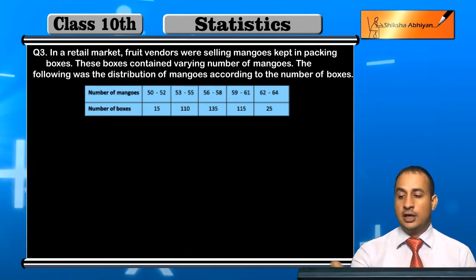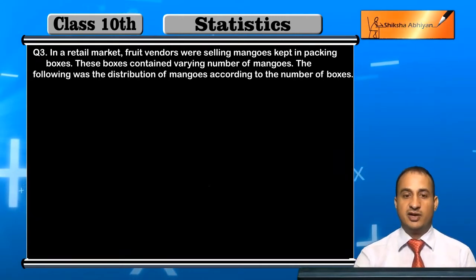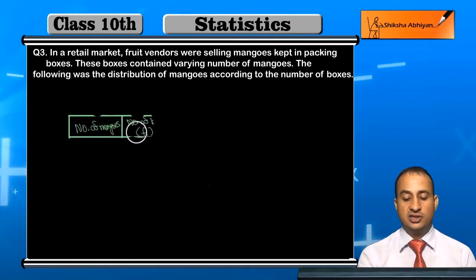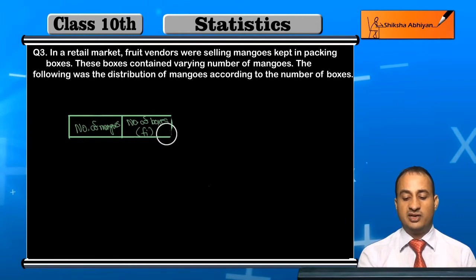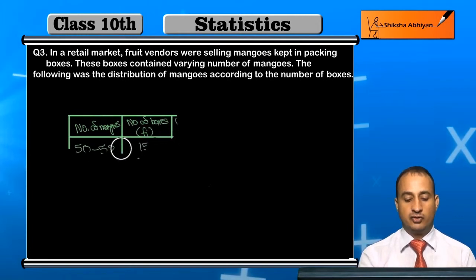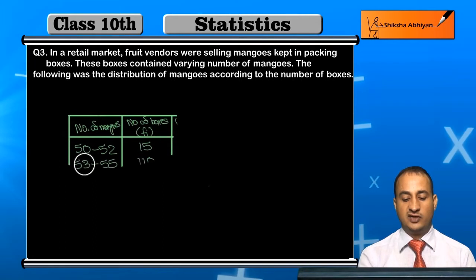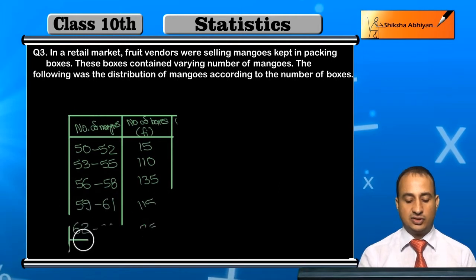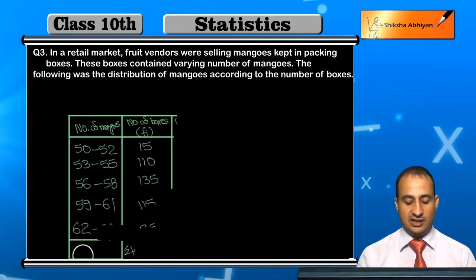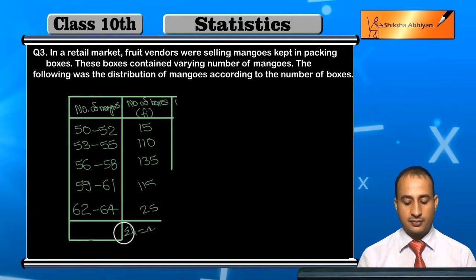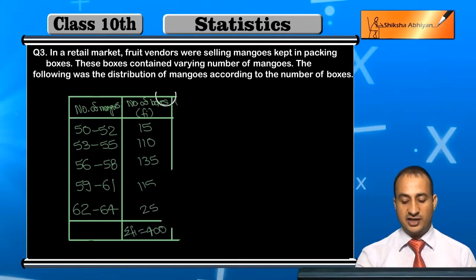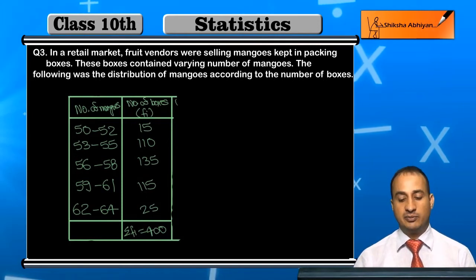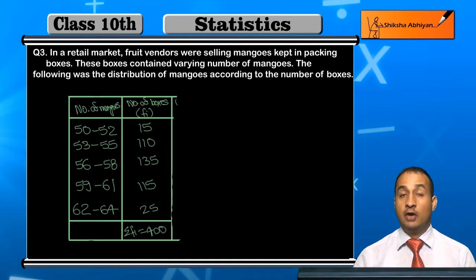First of all, let's write down the given data. We have the number of mangoes and their corresponding number of boxes, which will be our frequencies. Number of mangoes: 50–52 is 15, 53–55 is 110, 56–58 is 135, and so on. The total — sigma fi — when you add these values: 15 plus 110 plus 135 plus 115 plus 25 equals 400.